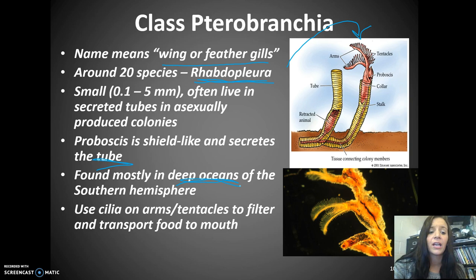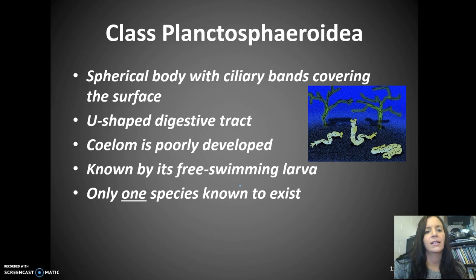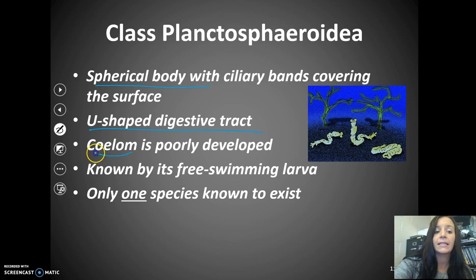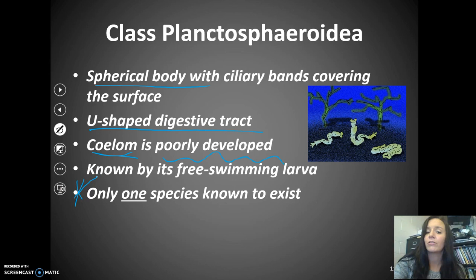The final class is Planktosphaeroida. These have a spherical body with ciliary bands covering the surface and a U-shaped digestive tract. They are considered coelomates, but the coelom is very poorly developed. They are known for their free-swimming larvae, and ironically, there is only one species known to exist — and it's almost impossible to find a picture of, which is why we have a drawing.